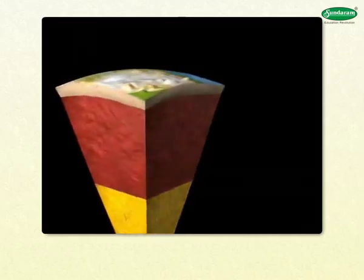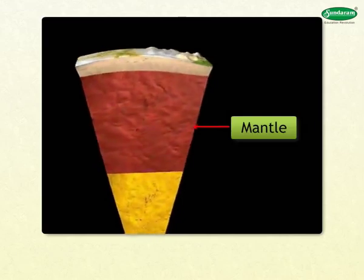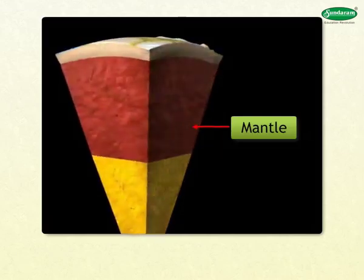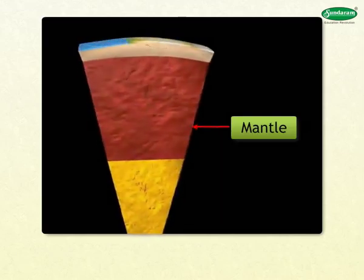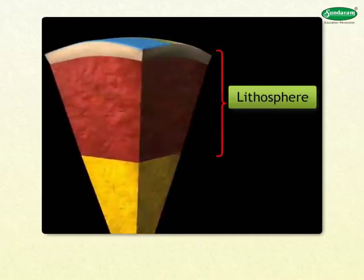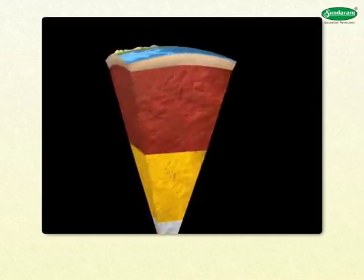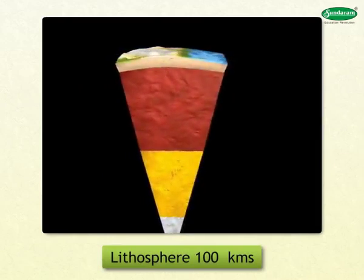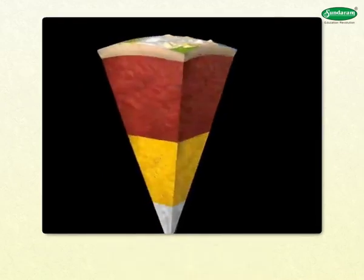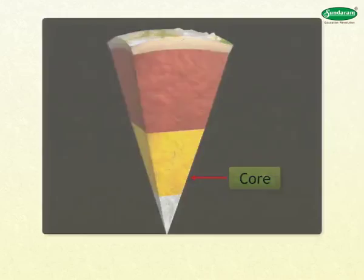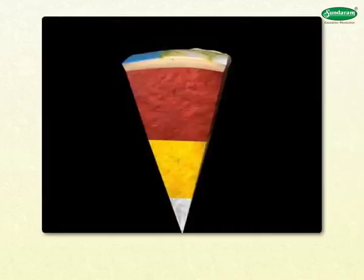Below the crust is the mantle. The crust and a portion of the mantle adjacent to it are together called lithosphere. Lithosphere is about hundred kilometers thick. The division below the mantle is called the core.